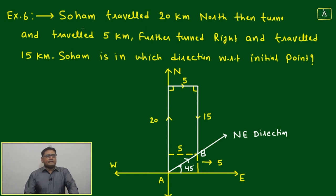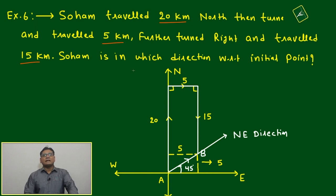Example number six: Soham traveled 20 kilometers north, then turned right and traveled 5 kilometers. Further turned right and traveled 15 kilometers. Soham is in which direction with respect to initial point?